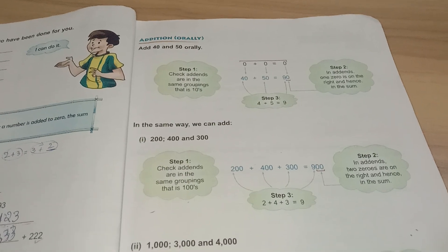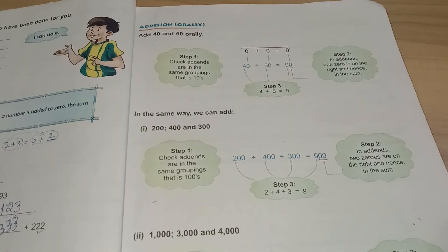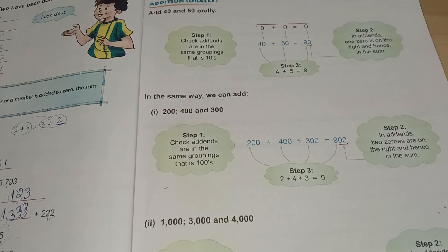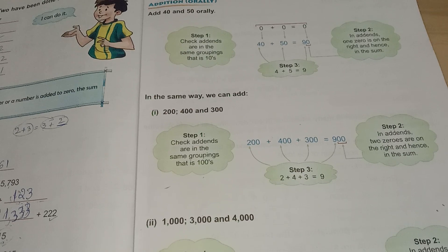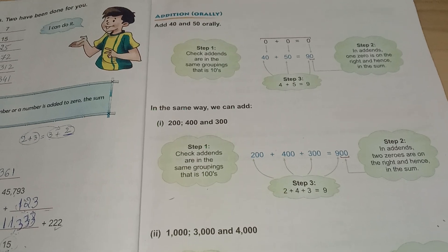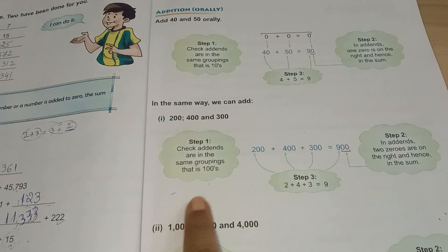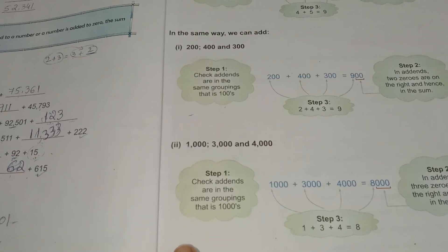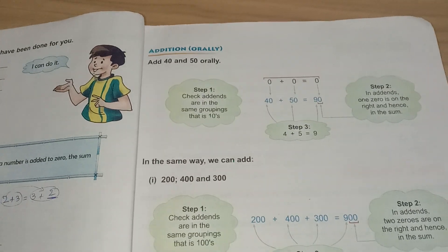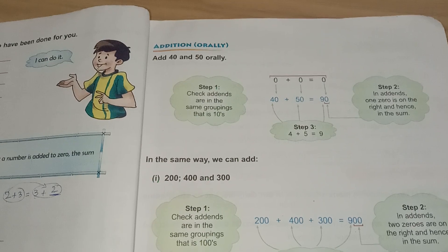Welcome children. In this class we will learn how to add numbers orally — by using your fingers and mind. Here the numbers are grouped: some numbers are grouped as tens, some as hundreds, and some as thousands. When we group tens with tens, hundreds, and thousands, we can add the numbers very easily orally.